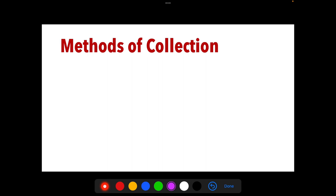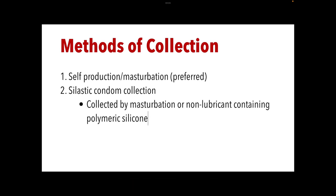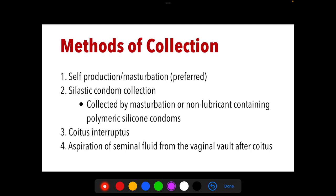For methods of collection, masturbation or self-production is preferred as it ensures the entire ejaculation is collected. A silastic condom can also be used, or non-lubricant-containing polymeric silicon condoms. Ordinary condoms are not acceptable because they have spermicidal properties — they would kill the sperm. Coitus interruptus (withdrawal method) and aspiration of seminal fluid from the vaginal vault after coitus are also methods.